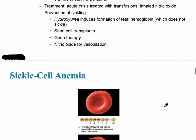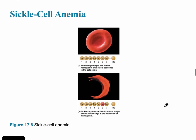In sickle cell anemia, instead of having a normal biconcave red blood cell, the lack of a single amino acid from the translation of the protein produces a crescent-shaped or sickle-shaped red blood cell. This is especially apparent when the red blood cell has to pass through a very thin capillary.